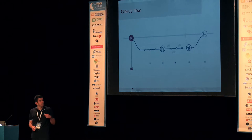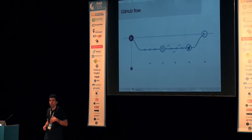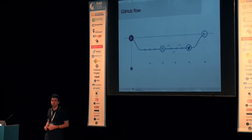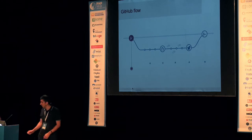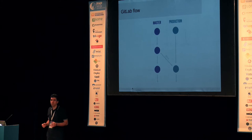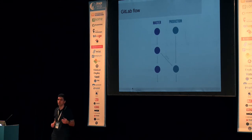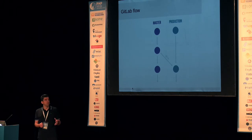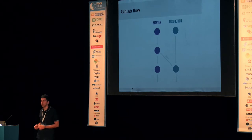Basically, when you are not in control of the exact release moment, you should think about using the GitLab flow, which is pretty much the same as GitHub flow with one extension — a production branch. Whenever you need to see the status on production and which code base is there, you simply check out the production branch.